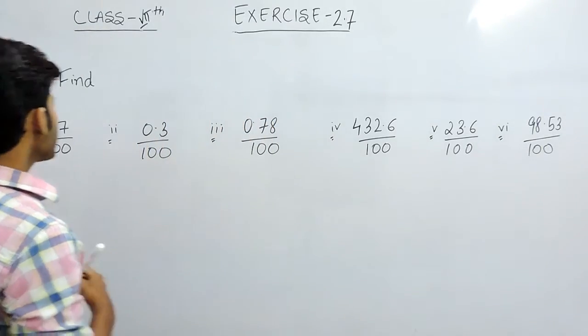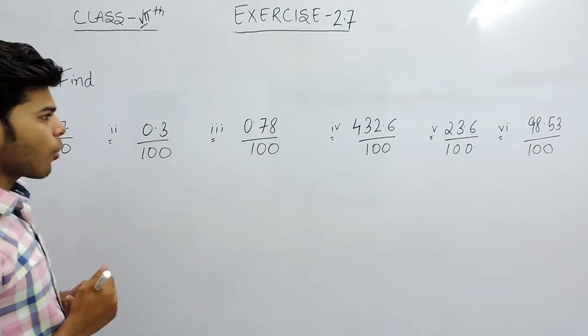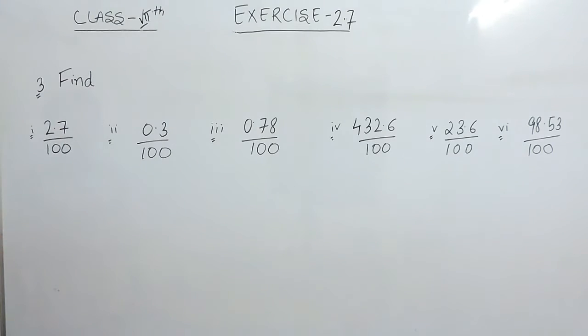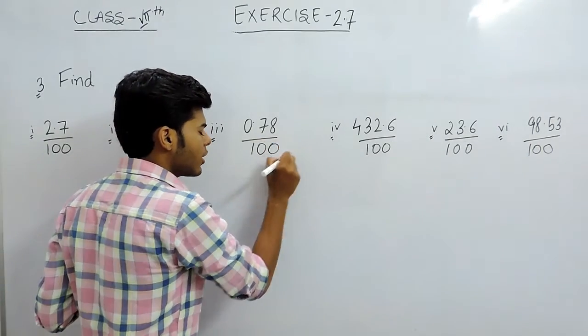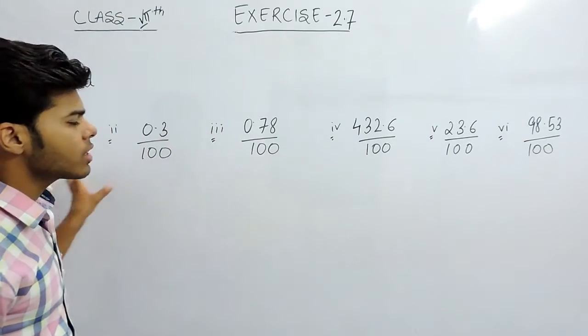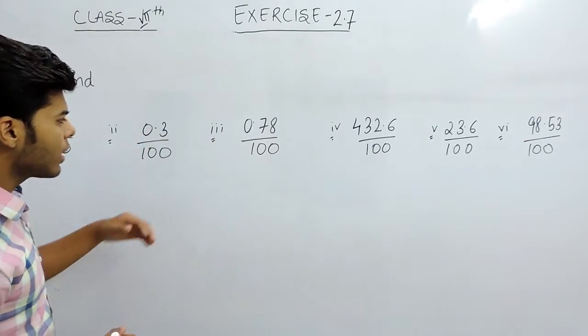Hello students, now we will solve the third question of exercise 2.7. This question is about decimal division. Here there are multiples of 10 in the denominator, and in all the questions it is 100 in the denominator.